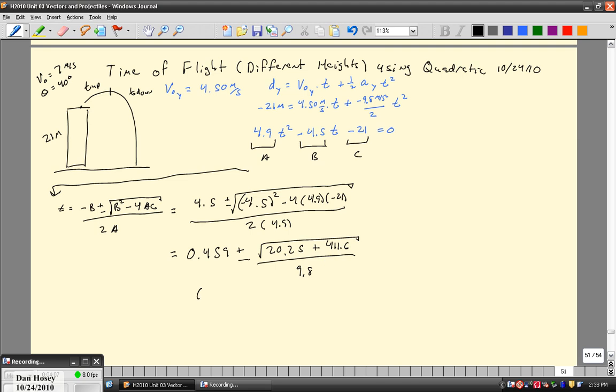So rewriting that, 0.459 plus or minus 2.121. So we get two answers. When you add, you get t equals 2.58 seconds. And when you subtract, you get t equals negative 1.66 seconds.